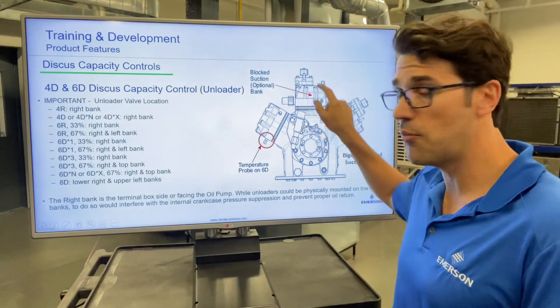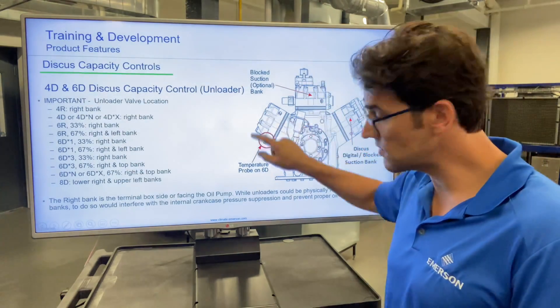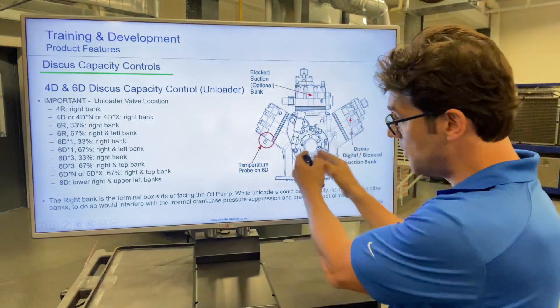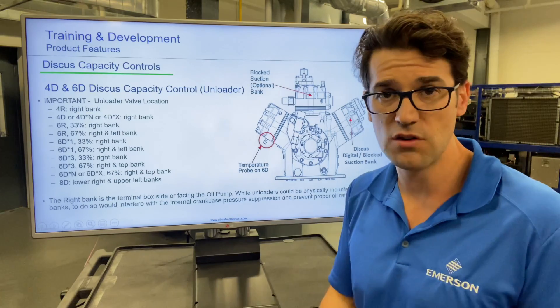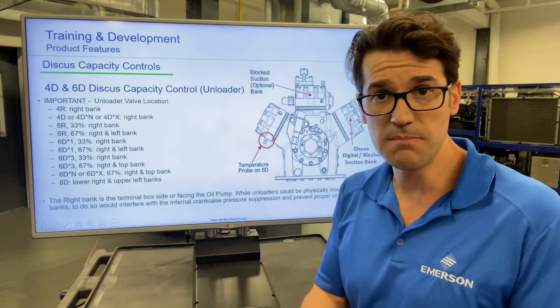On a 6D, the top one would be the other block suction. This is always the fixed one when you're looking at the pump. That's where you want to put the temperature probe in if you're using a core sensor or IDCM.